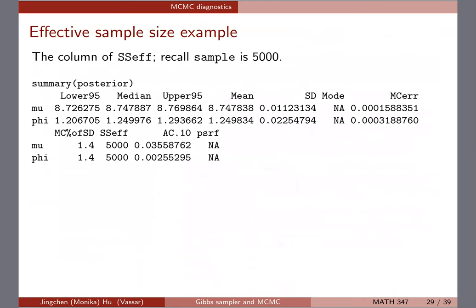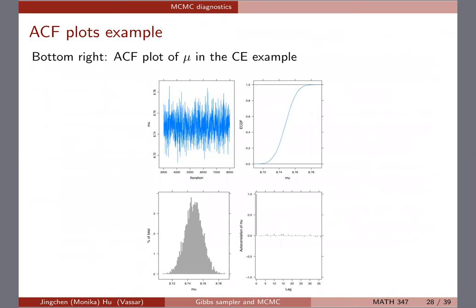If diagnostics are bad, you should run the chain longer and do more thinning. The autocorrelation plot tells you at which lag to thin. Right now we're working with simple models, so we don't encounter many MCMC issues, but when we move to Bayesian hierarchical models you'll start to see high autocorrelation and sticky chains, and that will be the time to perform serious MCMC diagnostics.